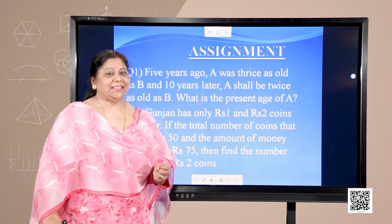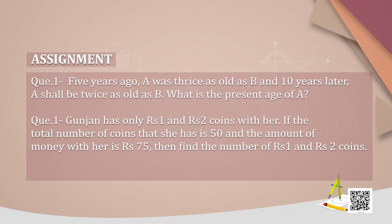Now let us take down some questions as assignment. First question: 5 years ago A was thrice as old as B, and 10 years later A shall be twice as old as B. What is the present age of A? Question 2: Gunjan has only 1 rupee and 2 rupee coins. The total number of coins is 50 and the total amount is rupees 75. Find the number of 1 rupee and 2 rupee coins. Please try to form equations and draw the graphs of the same.